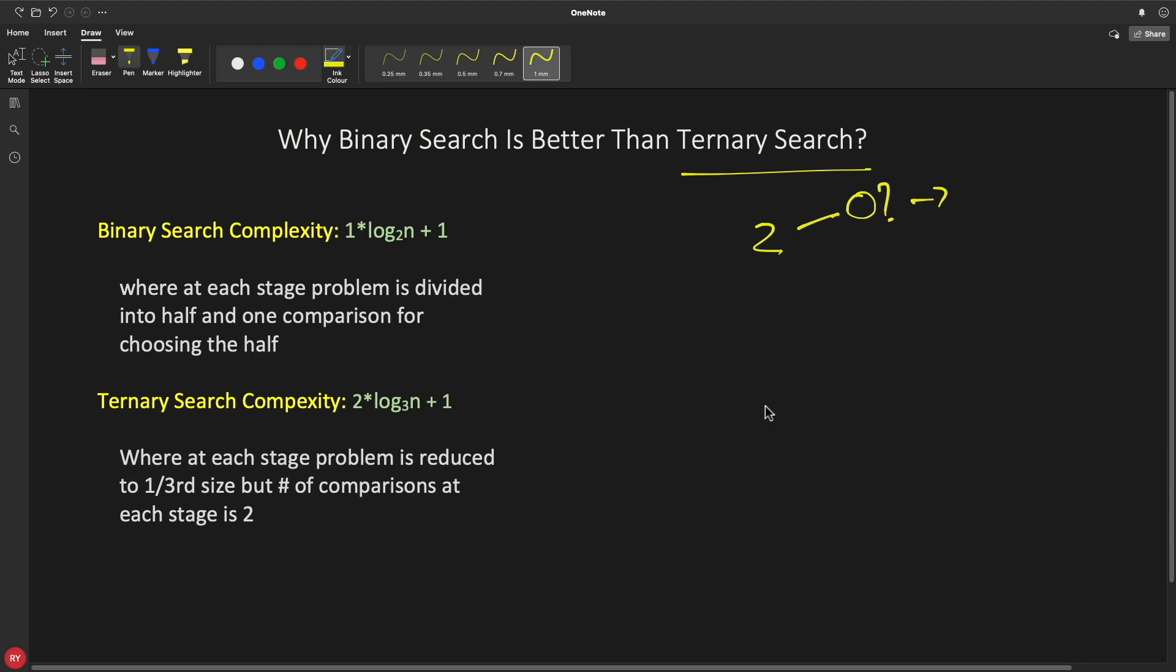So if I will write the formula for this it would look something like this. We have 2 times log base 2 n plus O(1). So this is for binary search and for ternary search we have 4 × log₃ n because we are dividing space into three now...